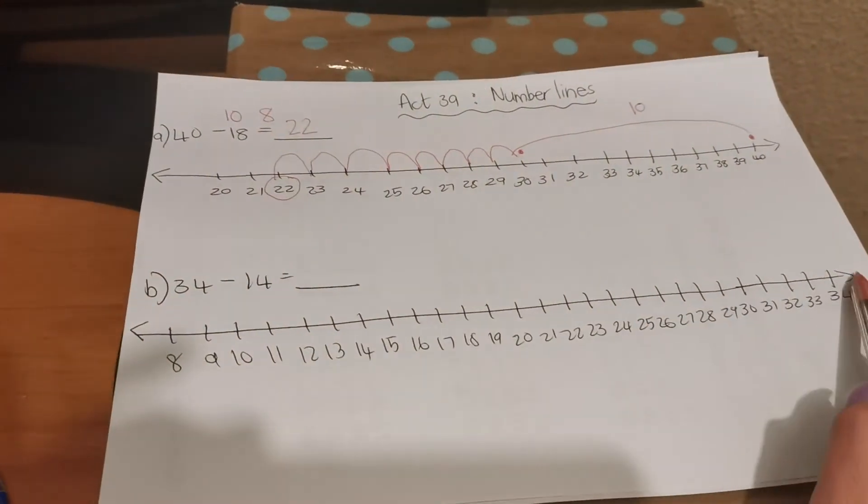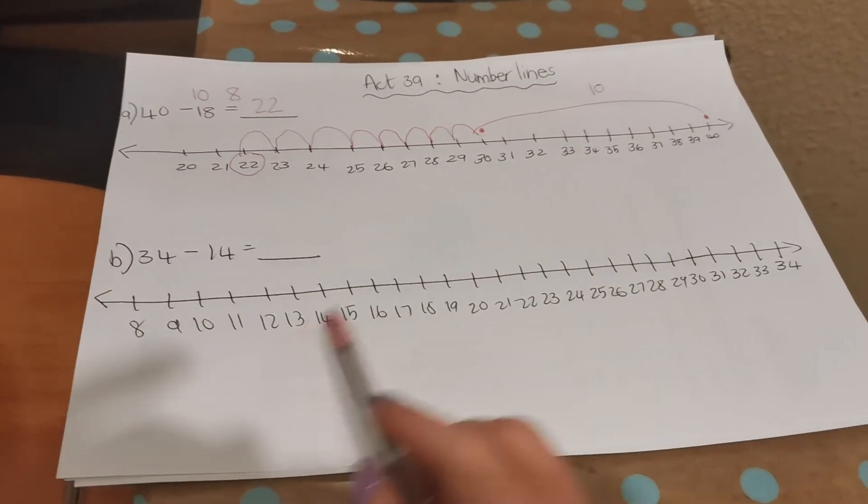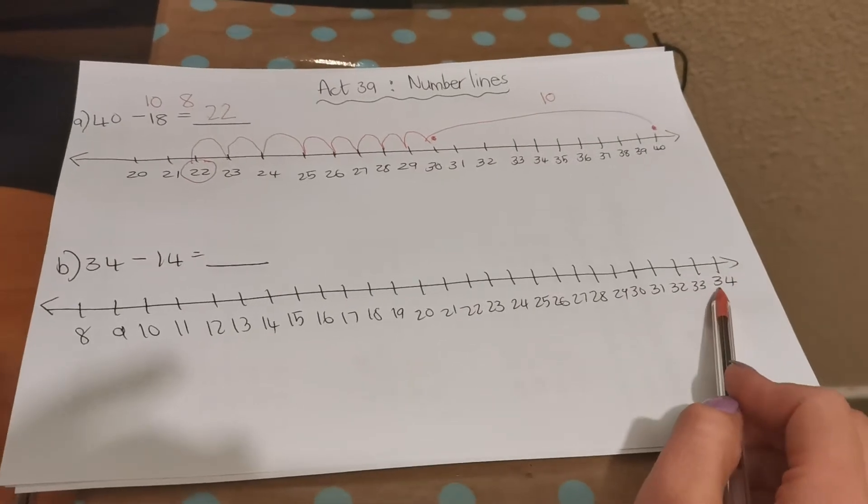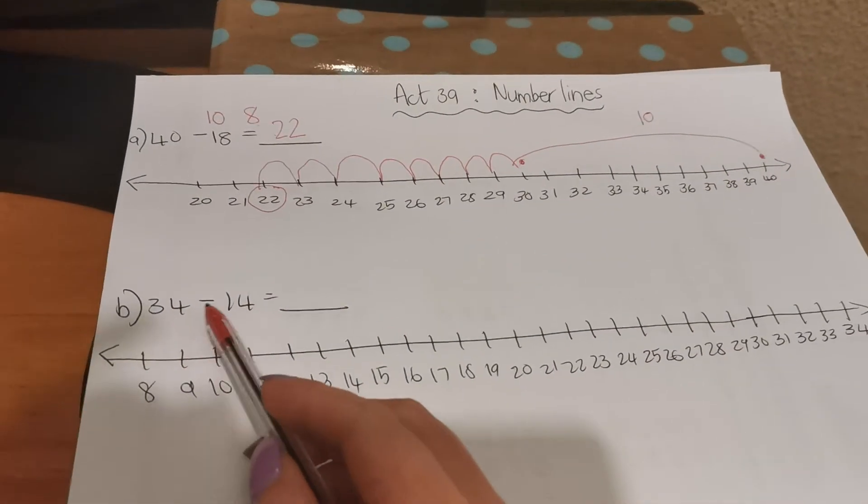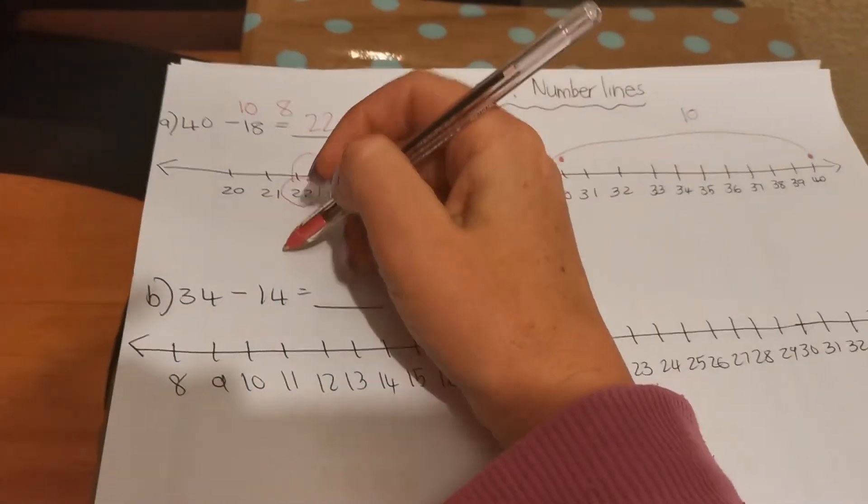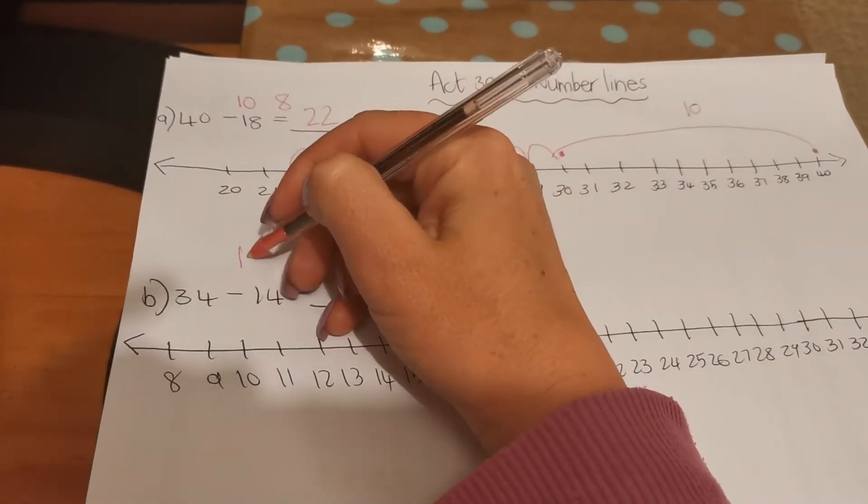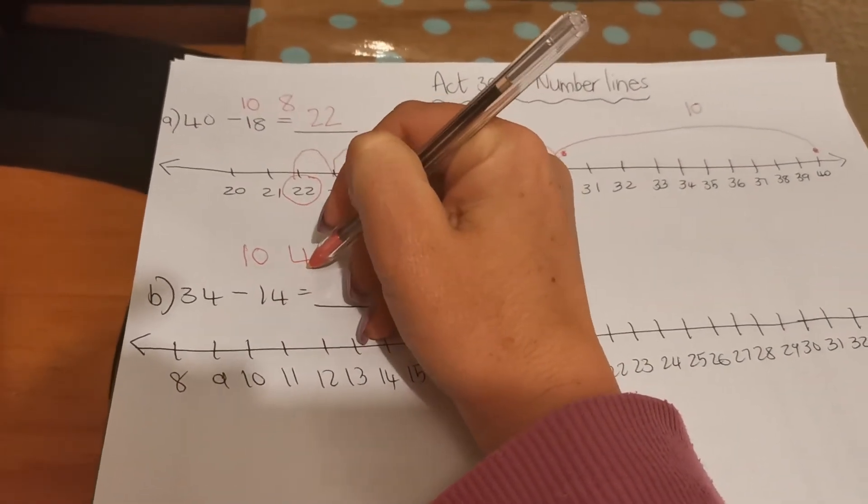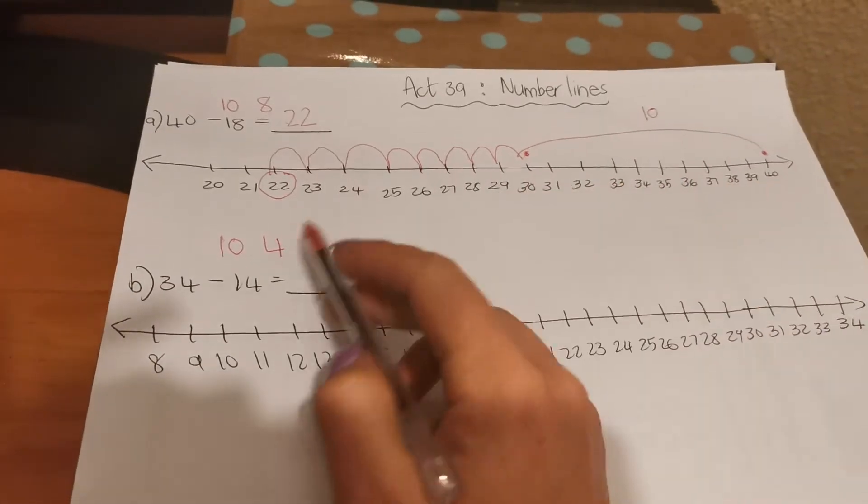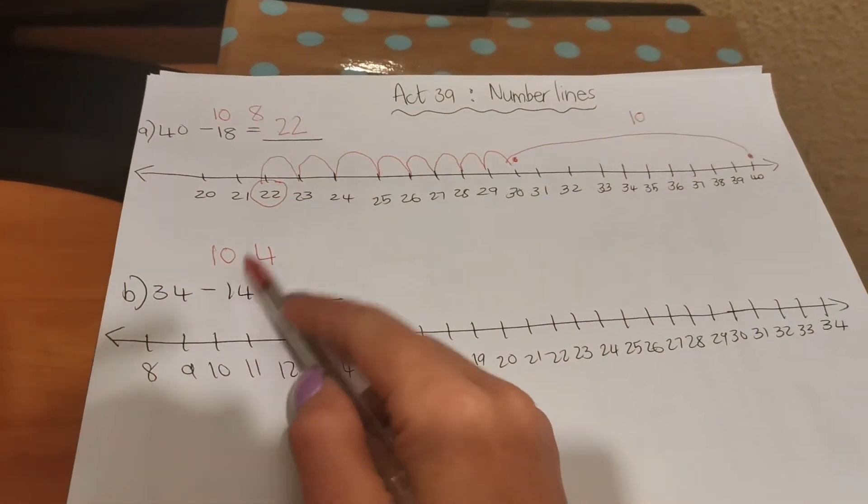Now the next sum. Again, teacher's already completed the missing numbers counting backwards from 34. Your sum is 34 take away 14. Now remember if you break 14 up into tens and units, it will be 10 and 4. So you're first going to say 34 take away 10.